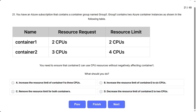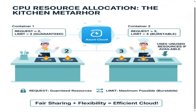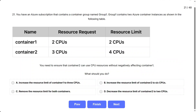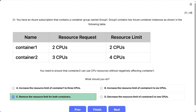Picture this like a restaurant kitchen. Container 1 is like a chef who needs exactly two burners and has reserved exactly two — request equals limit. Container 2 is like another chef who needs three burners but could use up to four if available. The question is: how do we let the second chef use extra burners when available without taking away the first chef's guaranteed burners? Correct answer: C) Remove the resource limit for both containers.